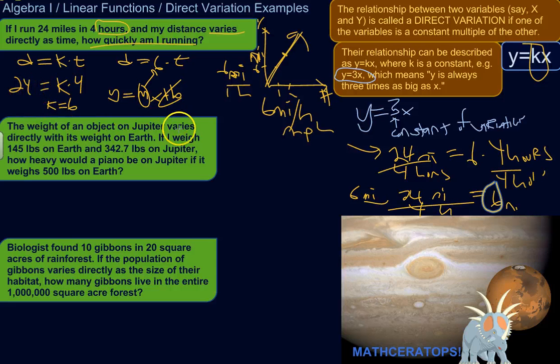Okay, so the weight of an object on Jupiter varies directly, keywords, with its weight on Earth. Actually, I guess I should say varies directly as its weight on Earth. To me, it's more intuitive to say with, varies directly with. But a lot of times you'll hear it varies directly as. So the weight of an object on Earth varies directly with its weight on Earth. So we call j is your weight on Jupiter. It varies directly with your weight on Earth. So your weight on Jupiter is some constant times your weight on Earth.